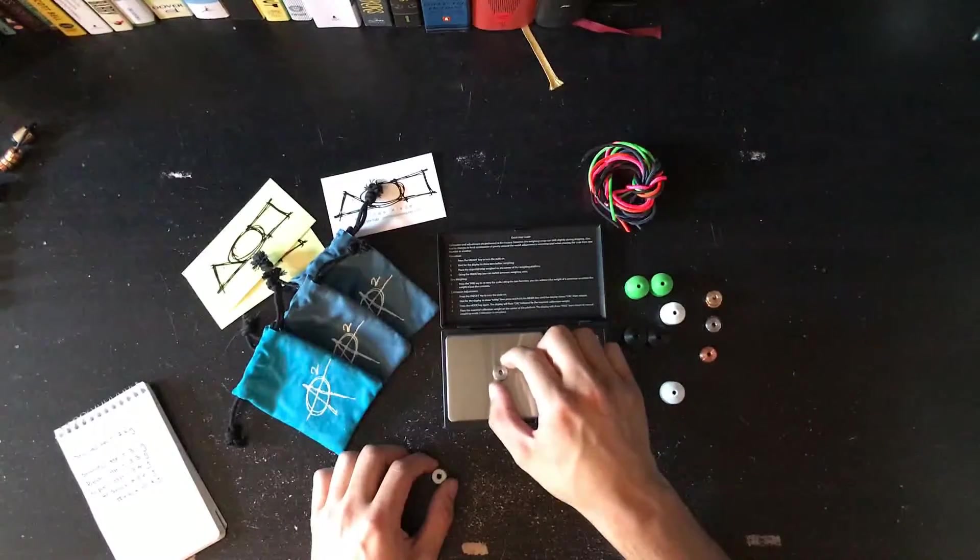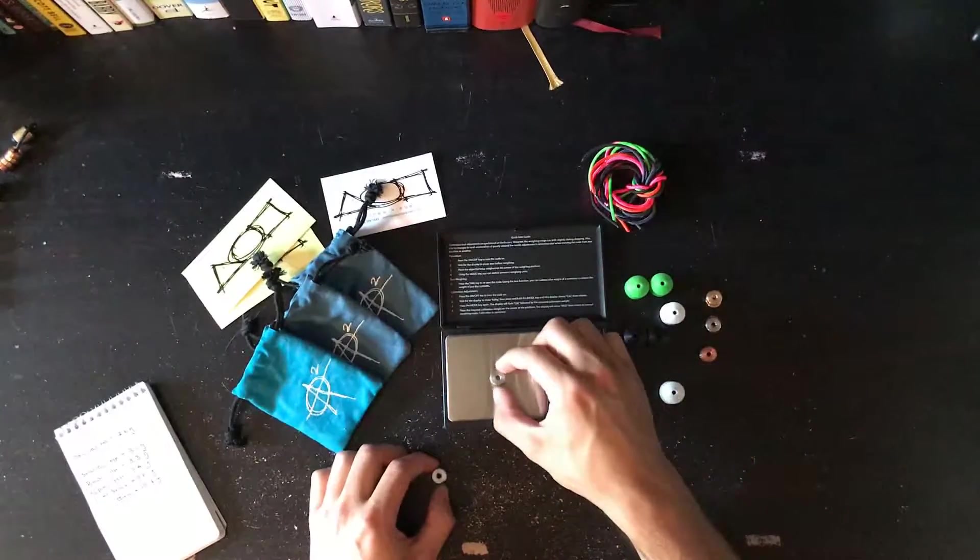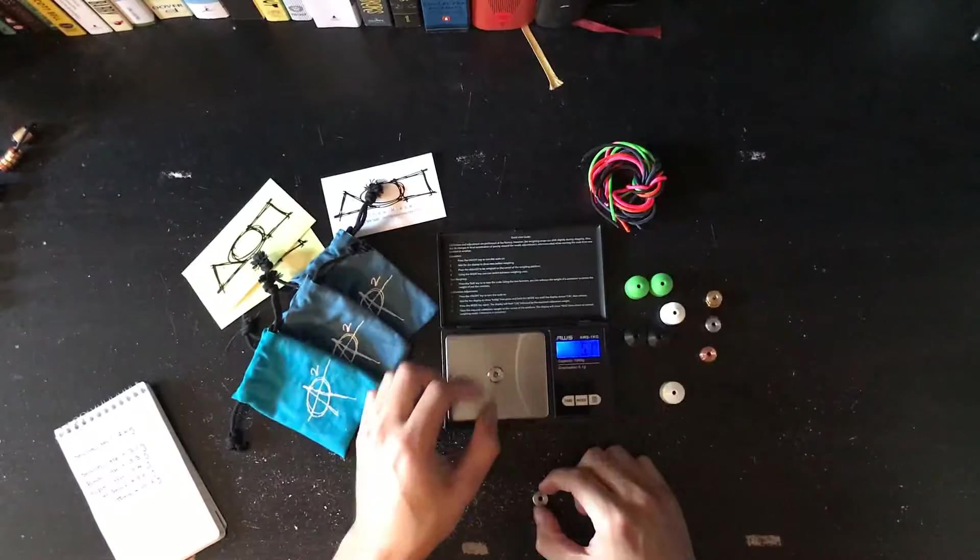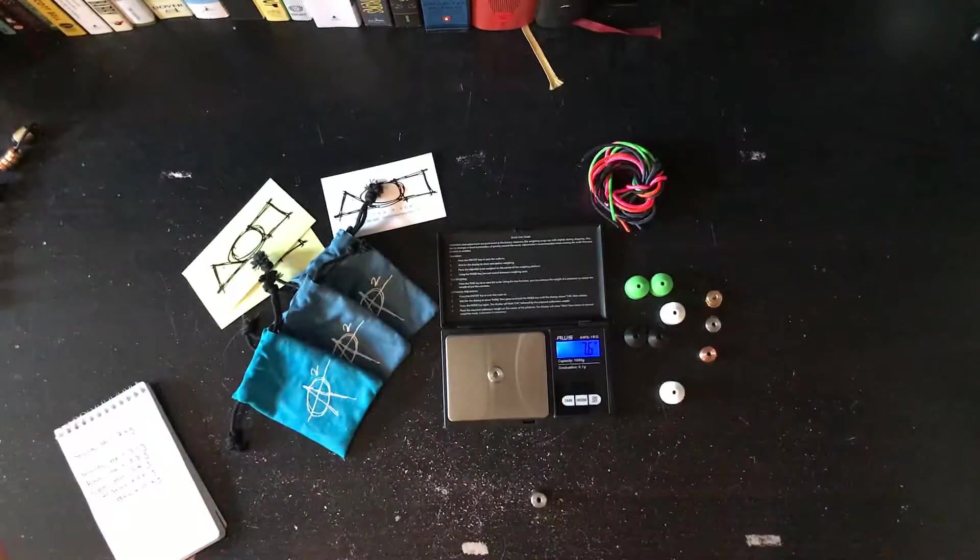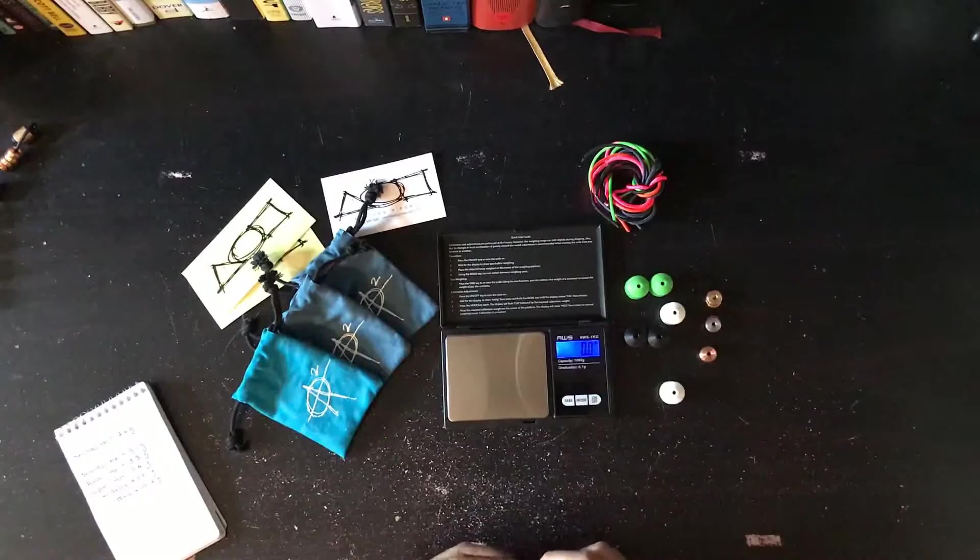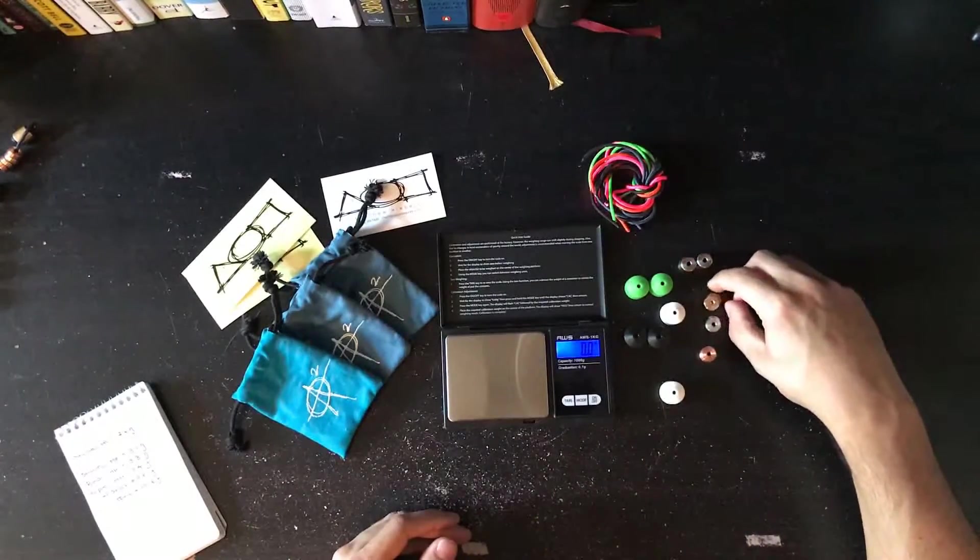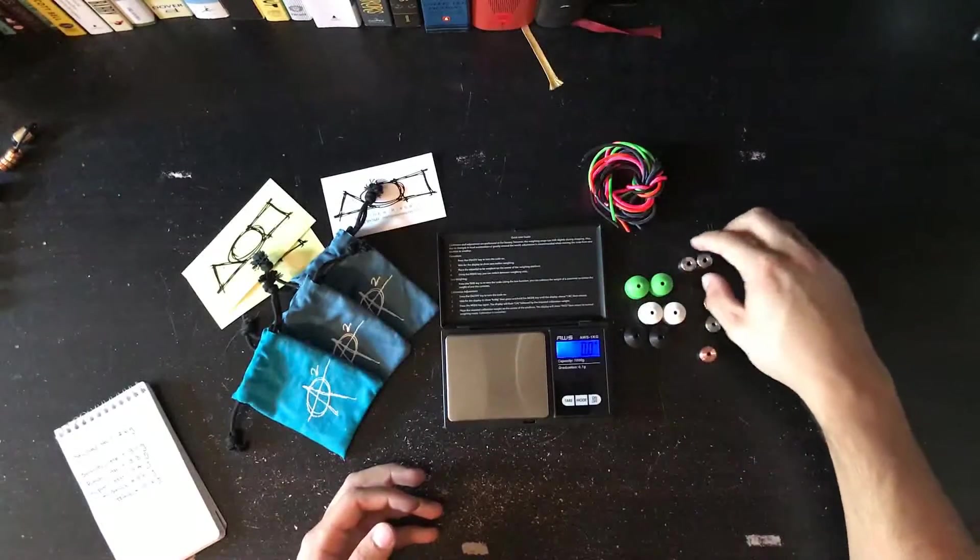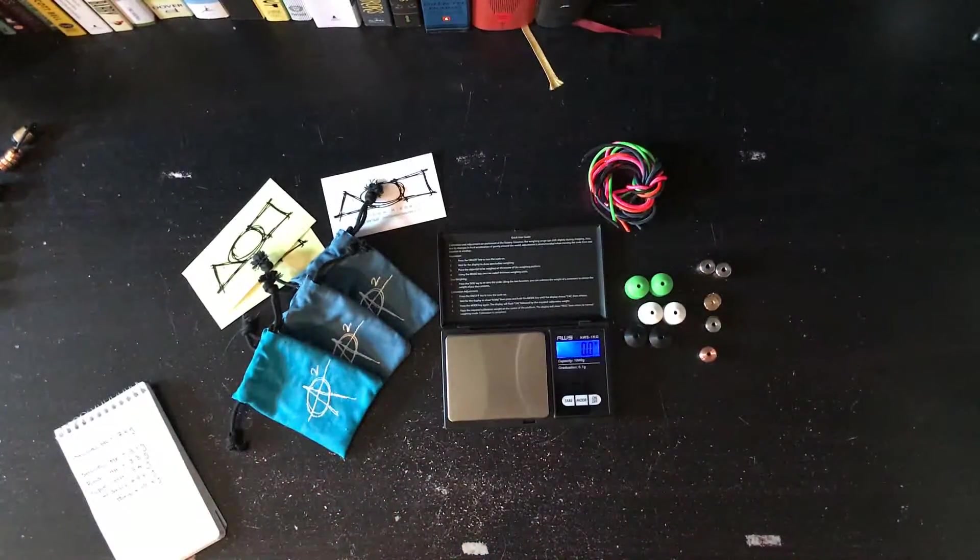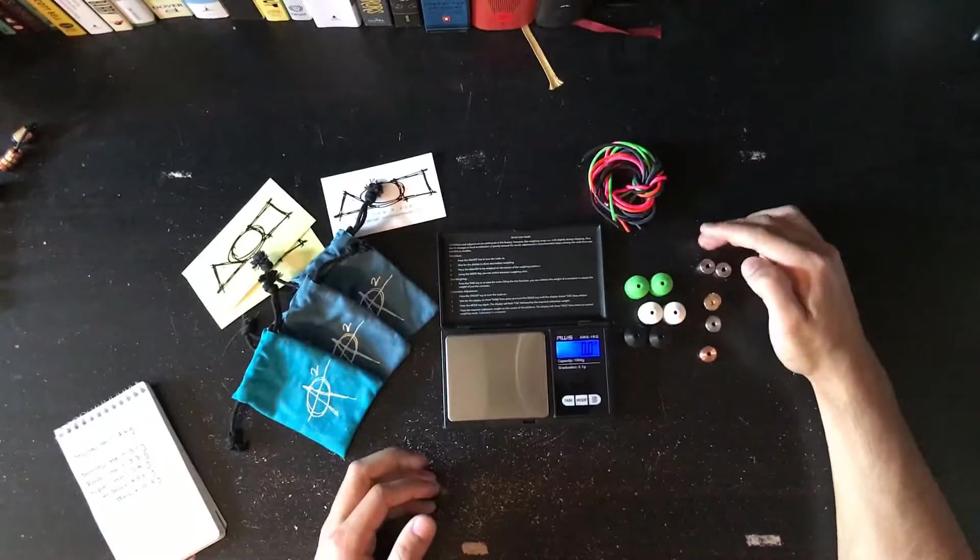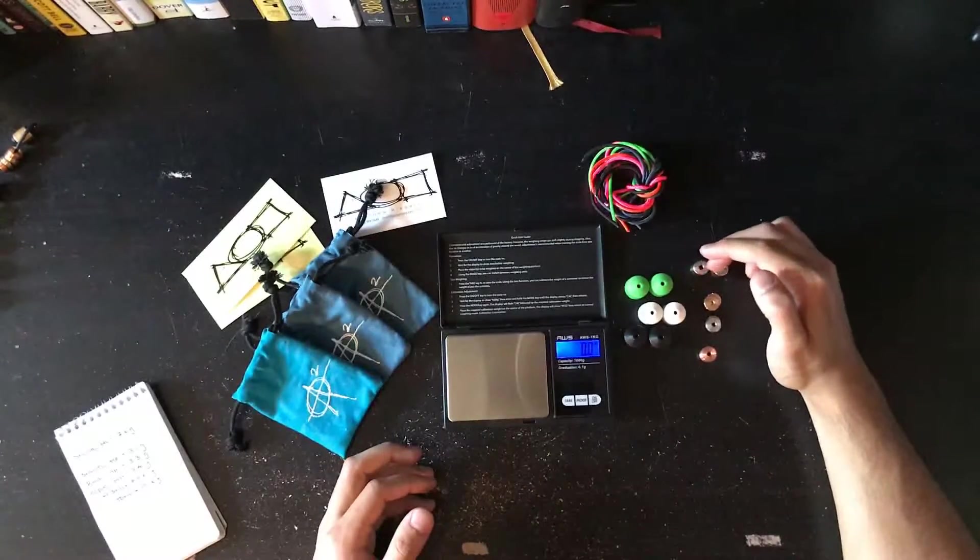That's 7.6, so this one is 7.6, and we're getting 7.6 now. So yeah, I think these all pass. Again, I haven't even calibrated this scale in quite a while, so even those variances could be my fault. But I'm pleasantly surprised, these are all dead on as far as I can tell.